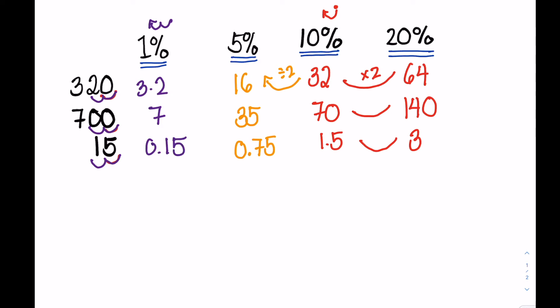If you plan to get the 5% using the 1%, just multiply the 1% by 5, you will still get the same answer. So 7 times 5 is 35, and 0.15 times 5 is 0.75.